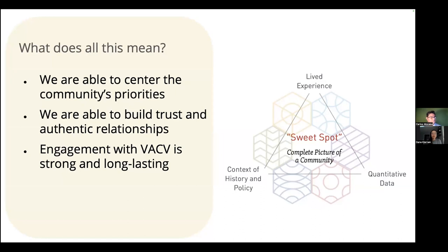We also oftentimes have to check our assumptions. When we were doing our initial survey, we got back that safety was a really big issue for this community. All of us sort of assumed it was violence and gun safety that was making people feel unsafe. But when we dove a little bit deeper and asked people in one-to-ones and interviews what made them feel unsafe, it actually turned out to be pedestrian safety. We were way off.